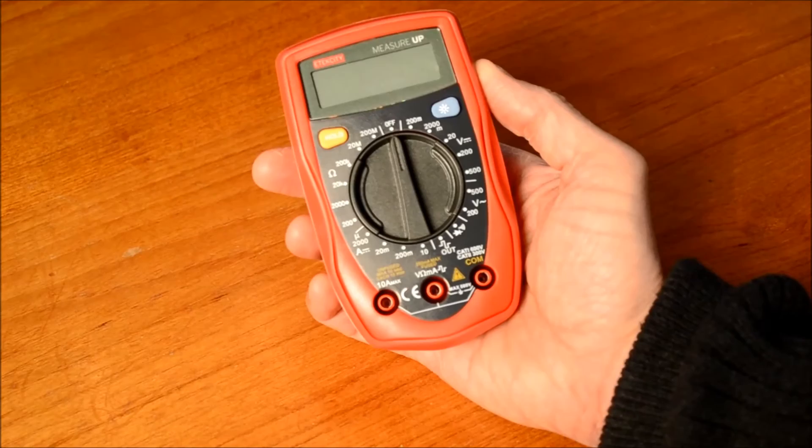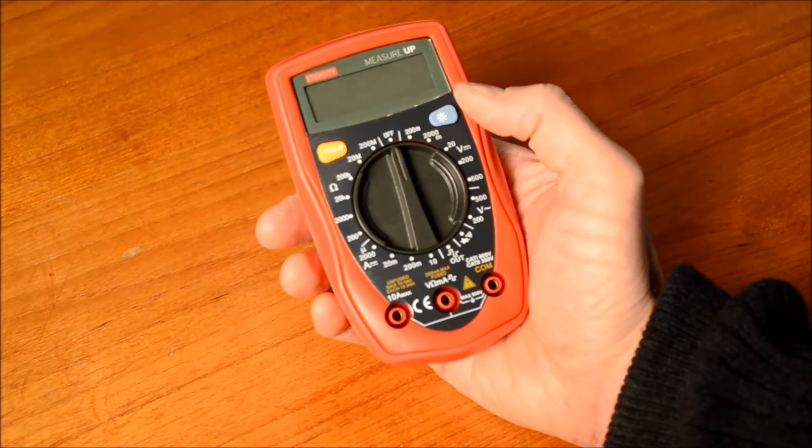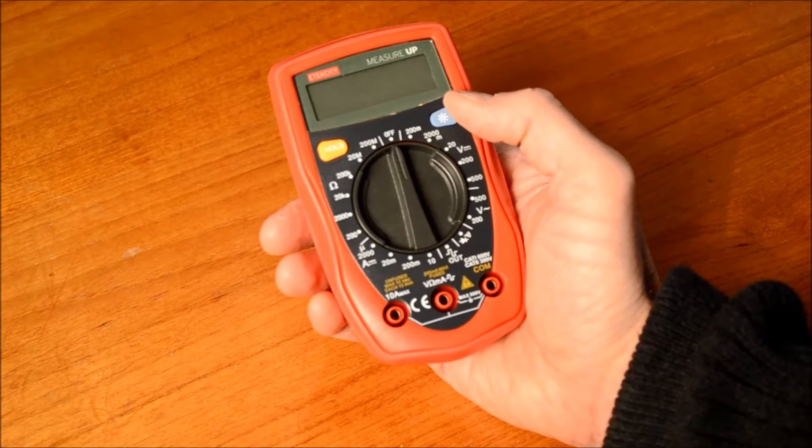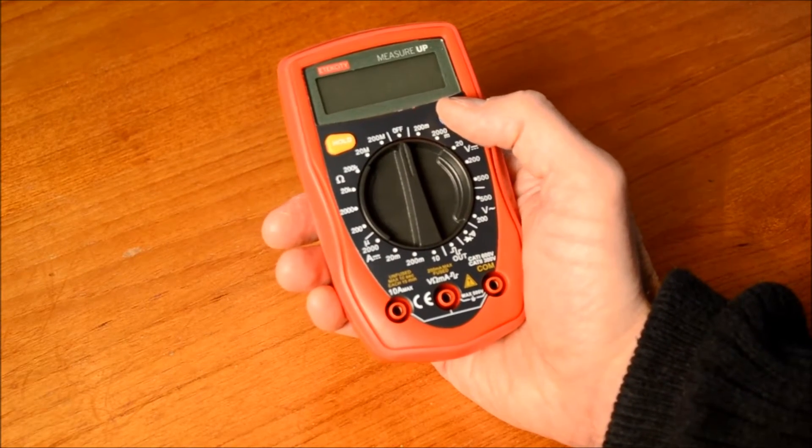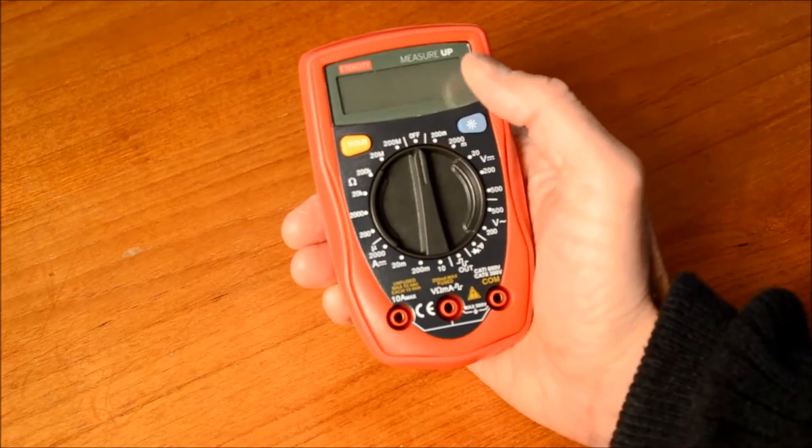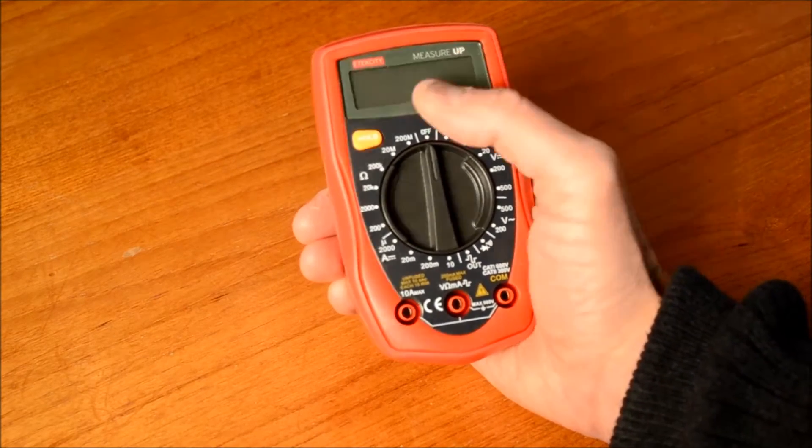This particular digital multimeter has a lot of useful functions. Number one, it has a backlight on it so when you make a measurement in a dark area, you can light up the display so you can easily see it in the dark. It also has a hold feature where you make a measurement, you can hit the hold button and it'll lock that measurement in place until you hit it again and clear.